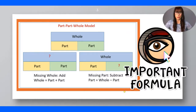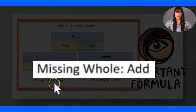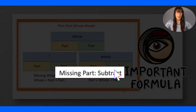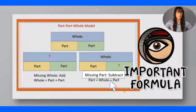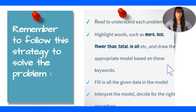Here I'm sharing with you the important formula that you should already know. Remember that a bar model is made out of a whole and two parts. If I have a missing whole, the whole is unknown — I put a question mark in that section — that means I have to do addition. If one of my parts is missing, I have to do subtraction. This is something you must know and not confuse if you want to do really well on your test next week.